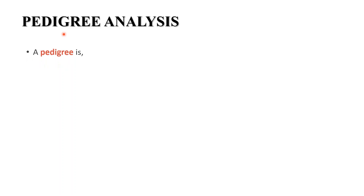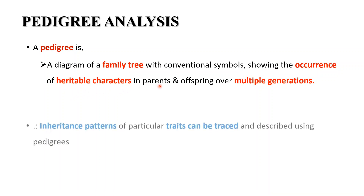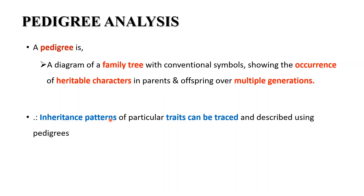Pedigree analysis. A pedigree is a diagram of a family tree with conventional symbols showing the occurrence of heritable characters in parents and offspring over multiple generations. Therefore, inheritance patterns of particular traits can be traced and described using pedigrees. Pedigree analysis most often identifies three modes of single locus inheritance: autosomal dominant, autosomal recessive, and X-linked recessive inheritance.